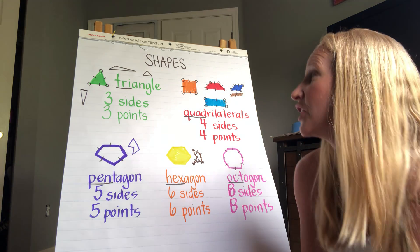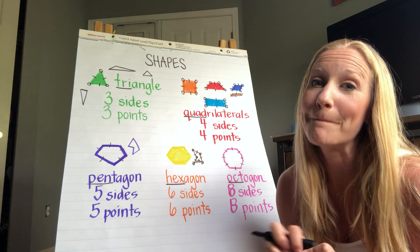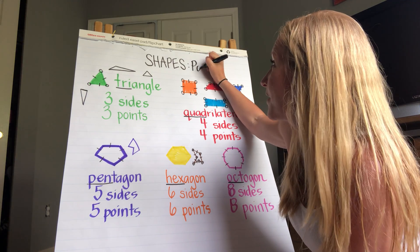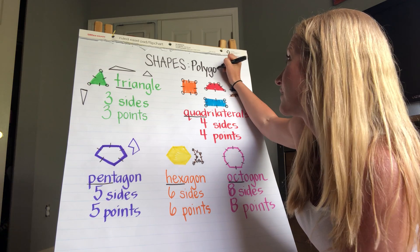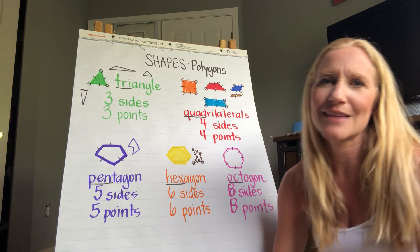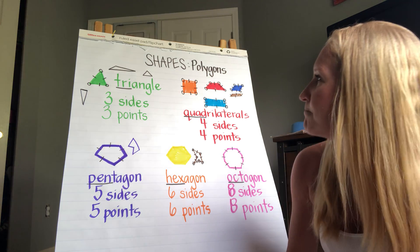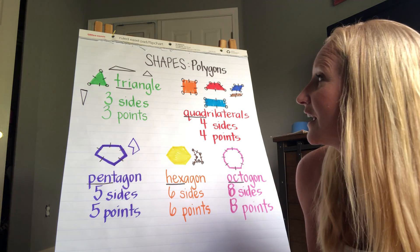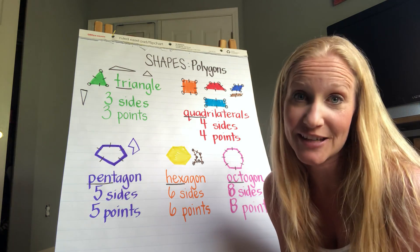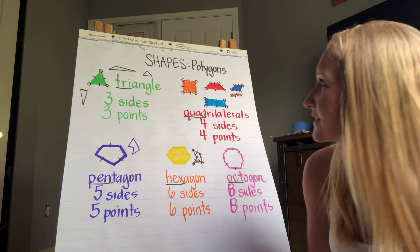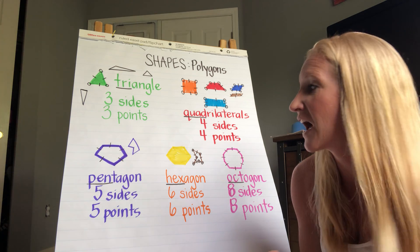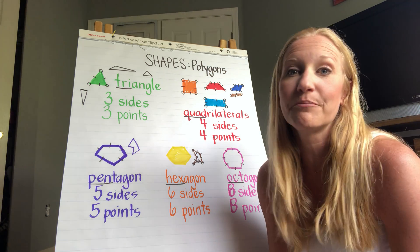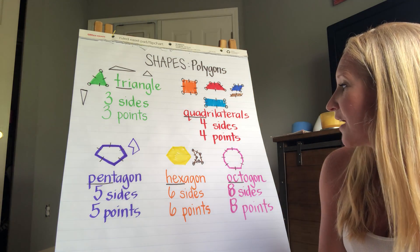Shapes in the math world are also called polygons — that's just a fancy name for shapes. All of these shapes have closed edges, meaning if they were a fence there would be no way to get in and no open gaps or spaces. Their sides and their vertices match up. This is just an intro to shapes; most of you probably already know these.